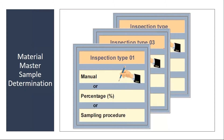This sampling procedure can be maintained in the material master as well. You can assign it to the inspection type in the material master. You can enter manual calculation, or you can enter a fixed percentage, or you can directly enter the sampling procedure. I will show this in the system.